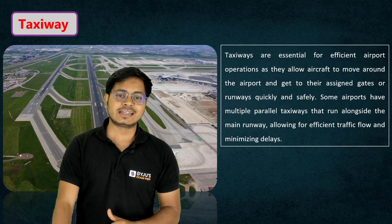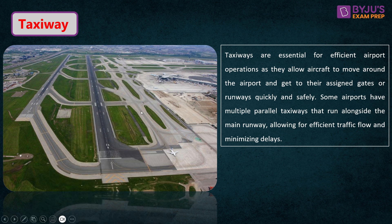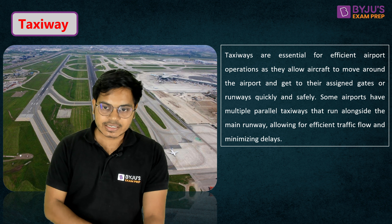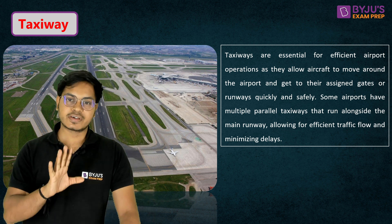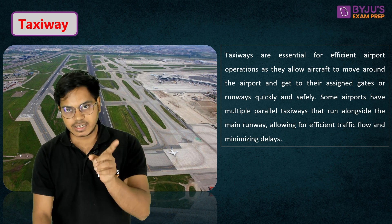Moving on to the next component: the taxiway. A taxiway is a pathway between the airport buildings and the runway. Aircraft use the taxiway to move around the airport. Taxiways are essential for efficient airport operation as they allow aircraft to get to their assigned gates or runways quickly and safely. In transportation engineering, specifically in airport planning, we also design the radius of the taxiway. There are three criteria, and we go for the maximum value — the highest radius from all three criteria.